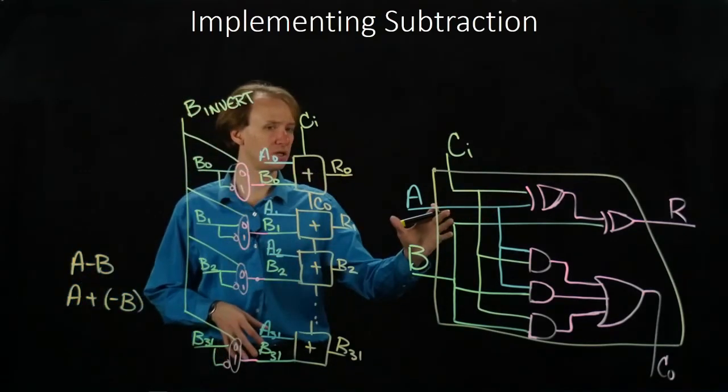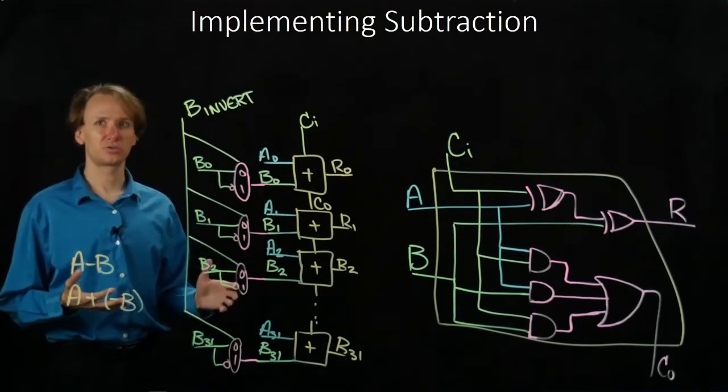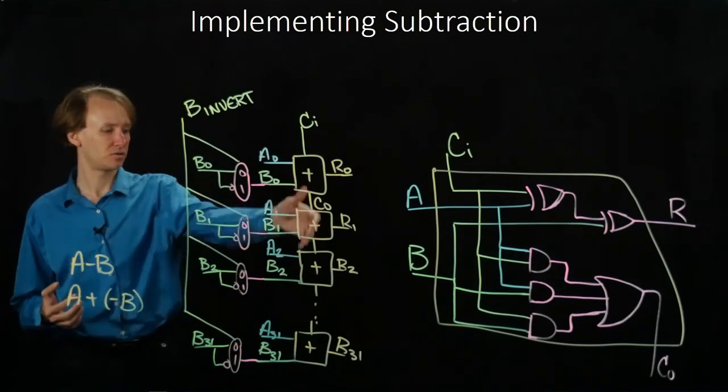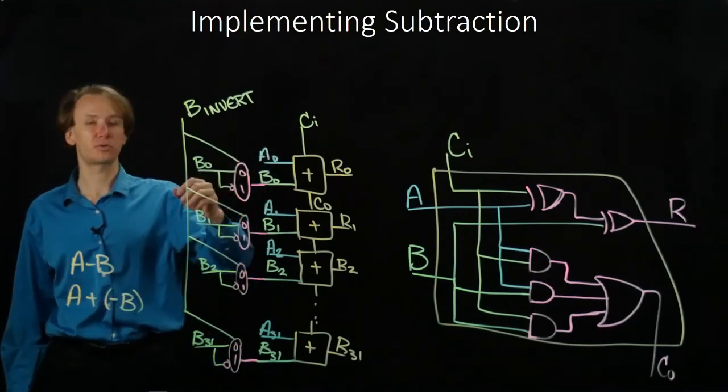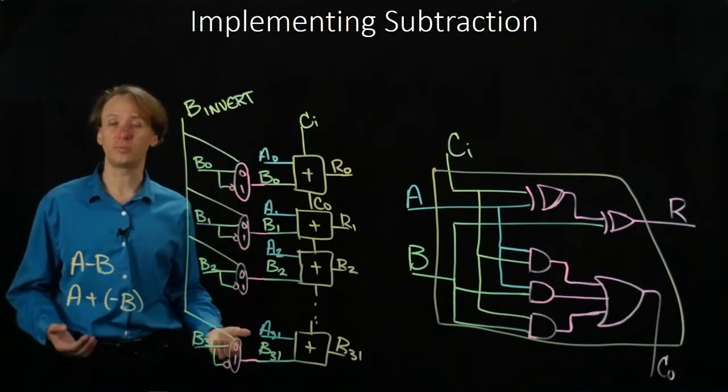So internally, we're still just doing the same 1-bit addition we did before. So everything else is going to stay the same. We're still using our 1-bit adders. They're still all connected the same way as they were before. But now we can choose whether we want to do addition or subtraction thanks to these handful of multiplexers.